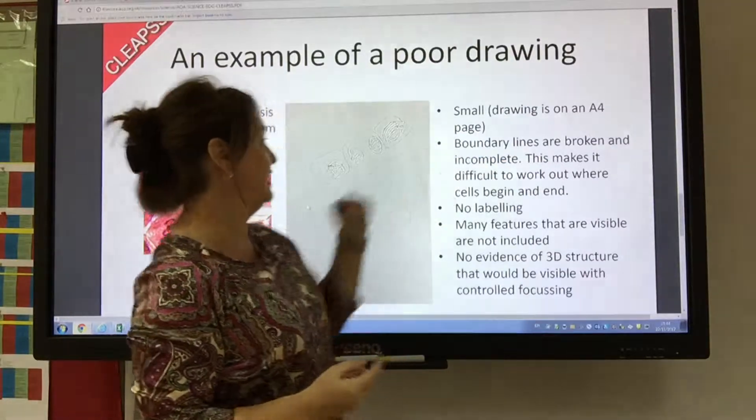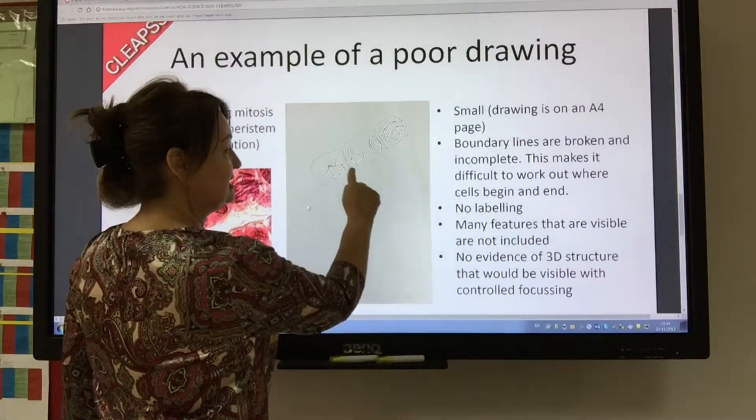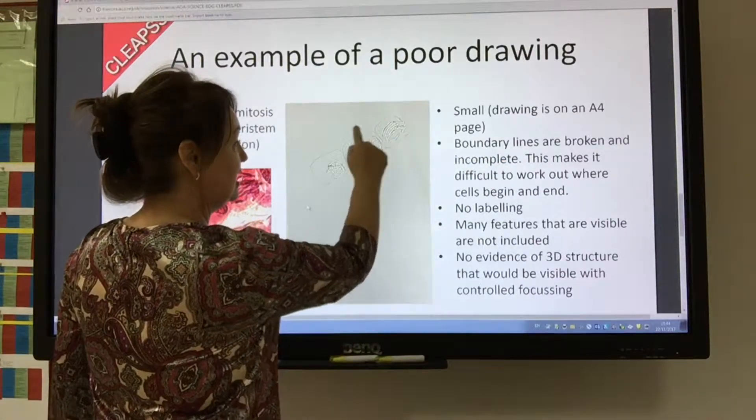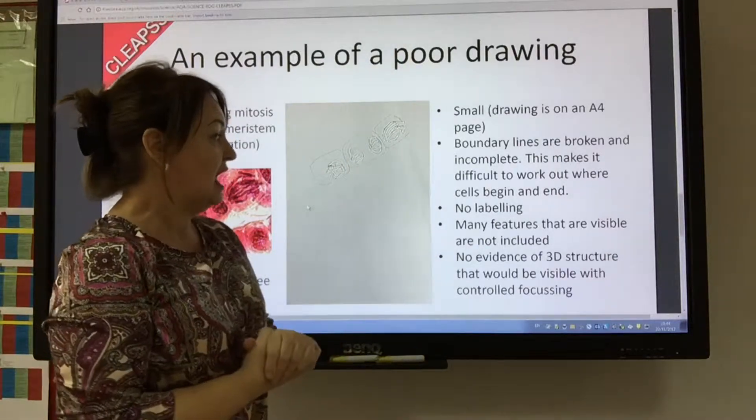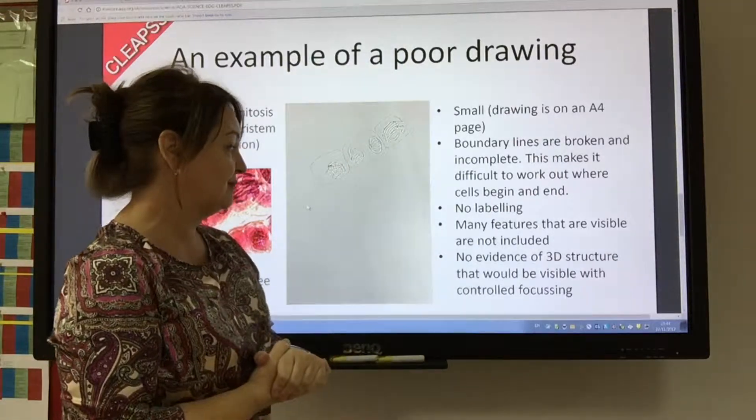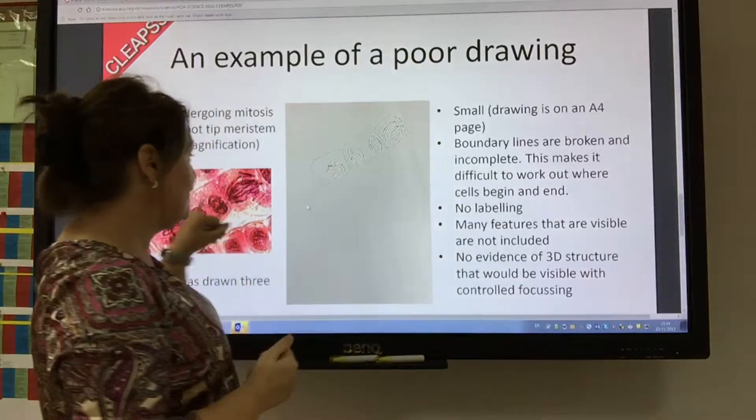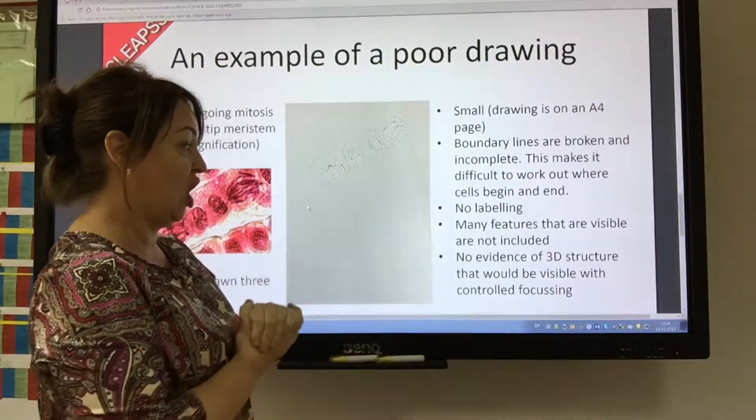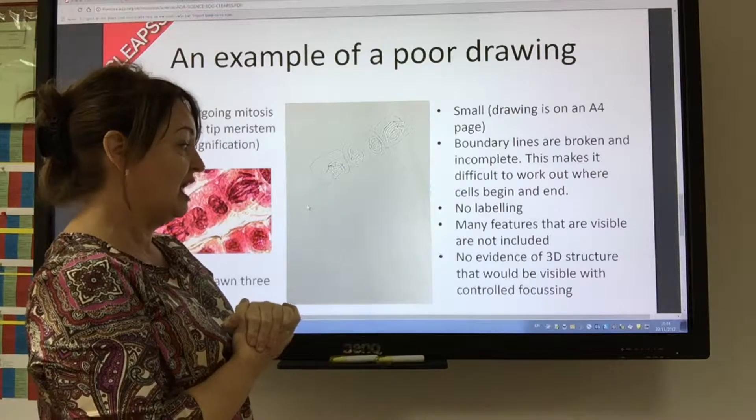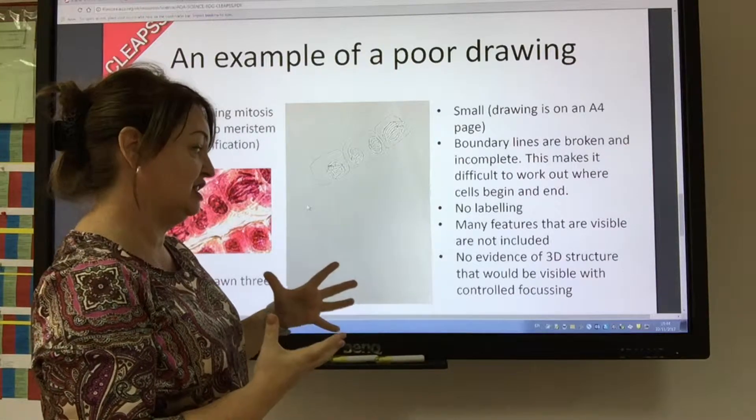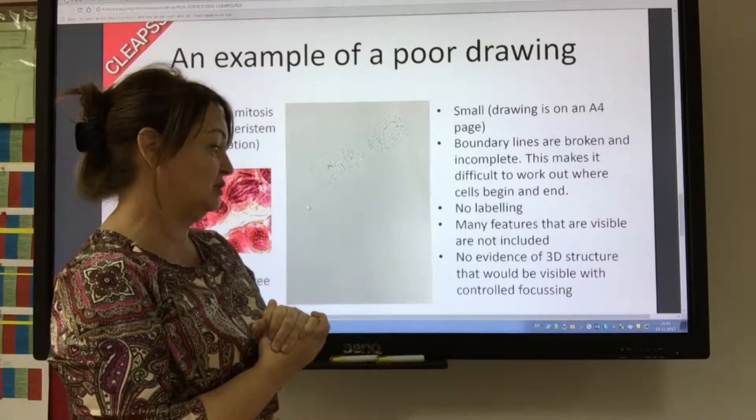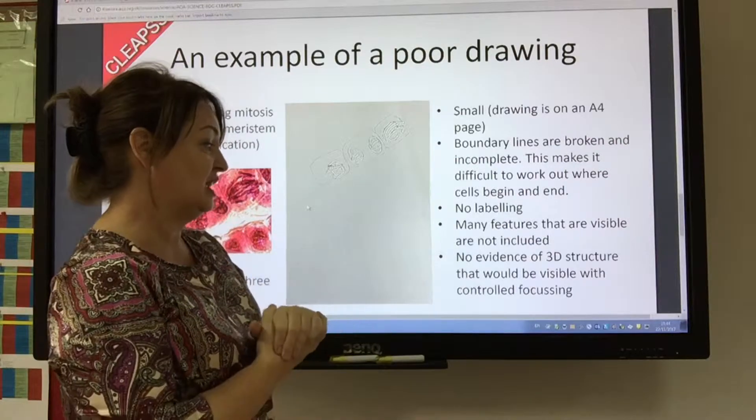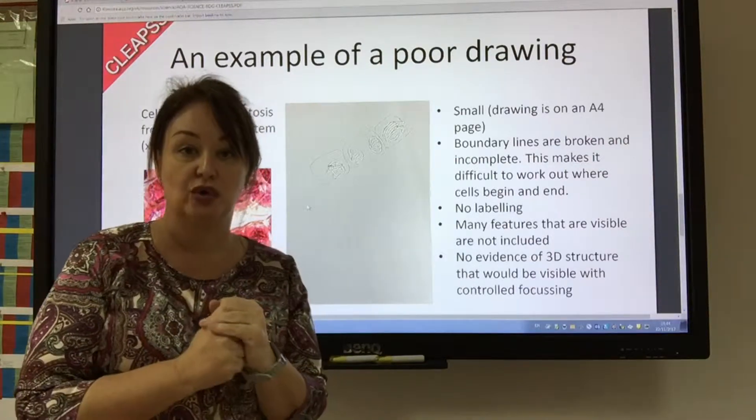The boundary lines are broken and incomplete. What does that mean? It means these lines around here are sketchy. And no labeling. Many features that are visible in there are not actually included in the detail of the drawing. And there's no evidence of a 3D structure that you'd be able to see with some controlled focusing.